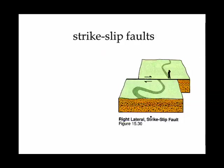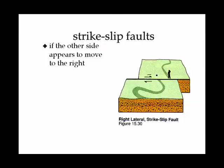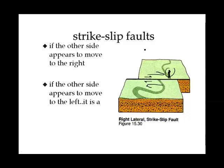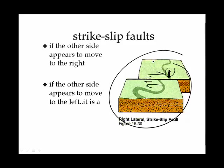A strike-slip fault involves horizontal movement. In this example, the side across from you looks like it moved to the right — but it doesn't really matter which side you're standing on; the other side always looks like it moved to the right. If the other side looks like it moved to the left, you have a left lateral strike-slip fault. So: right lateral and left lateral strike-slip faults.